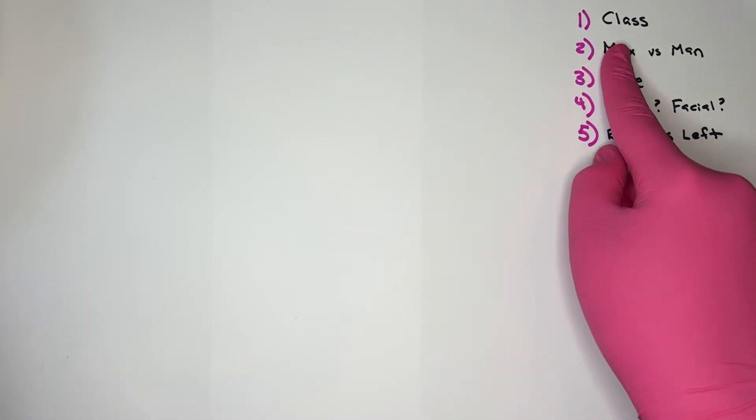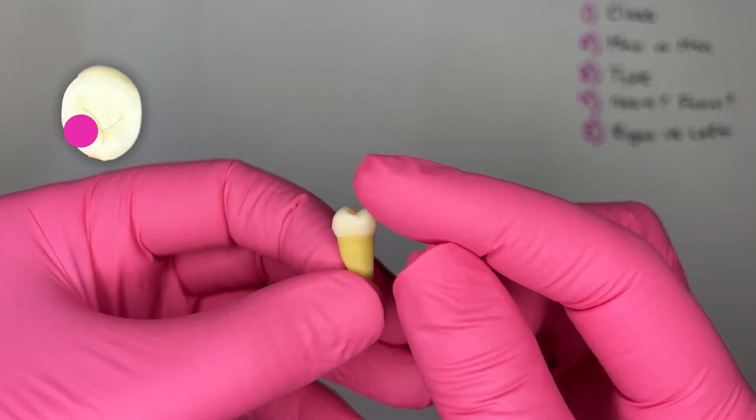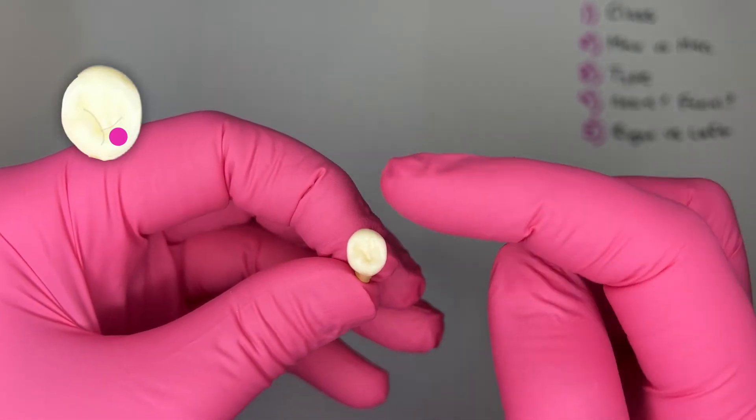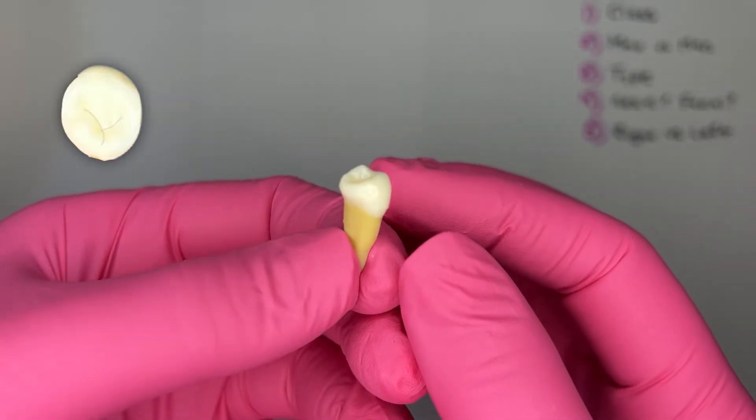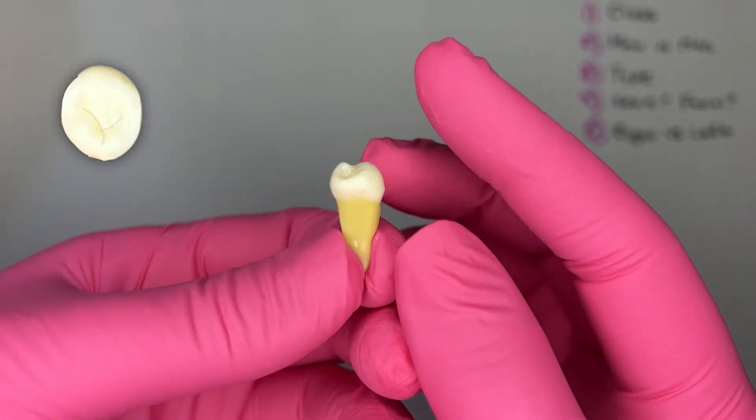Step number one, what class of tooth is this? I look at the number of cusps. I see one, two, three cusps. A tooth with two or three cusps is a premolar, so I know that this tooth is a premolar.